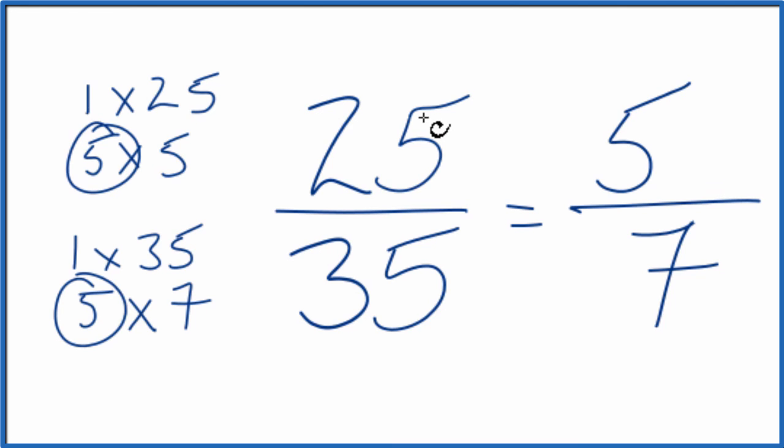These are equivalent fractions: 25 divided by 35 and five by seven - they give you the same number. It's just that we've reduced or simplified 25 35ths to five sevenths.